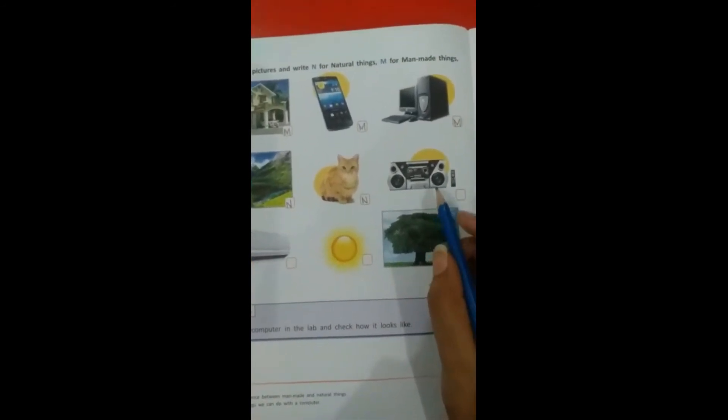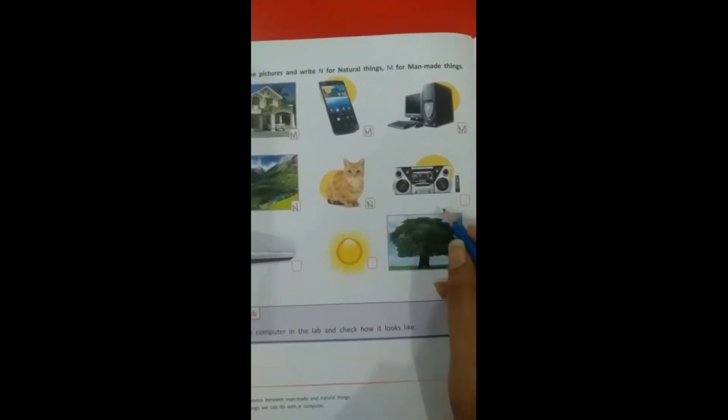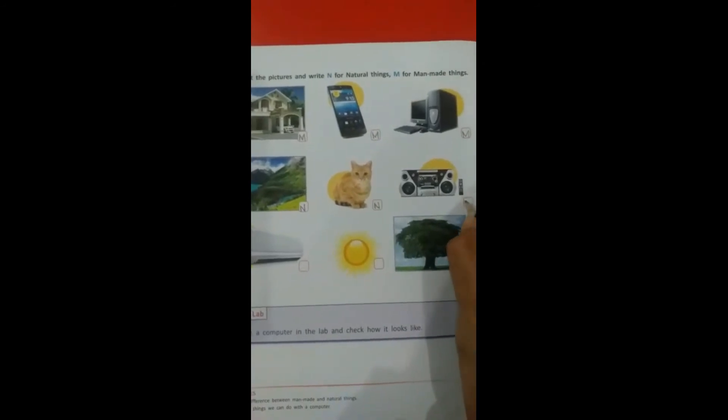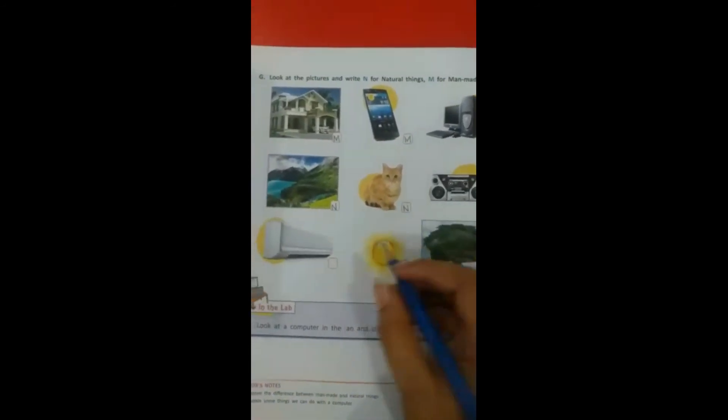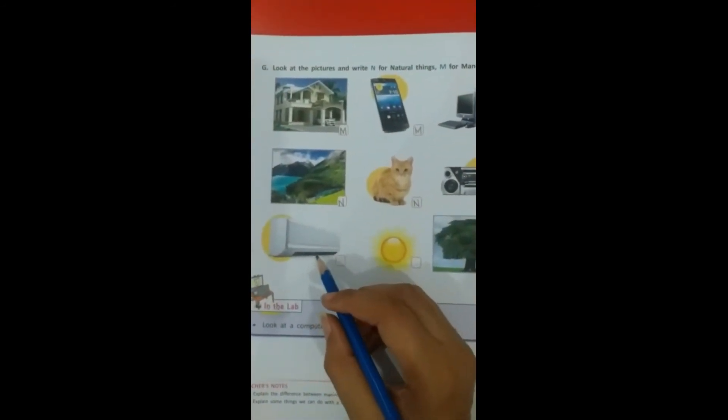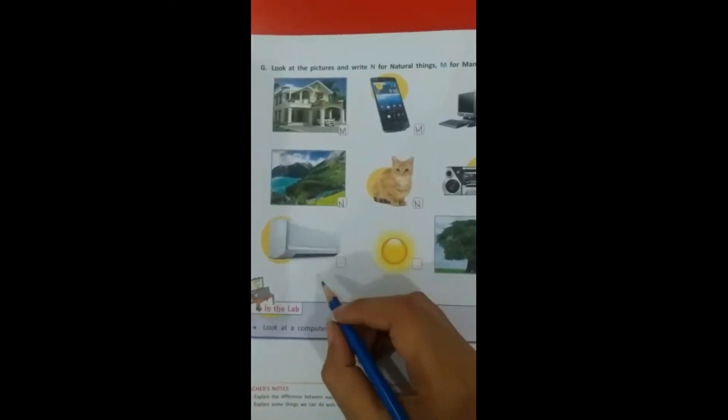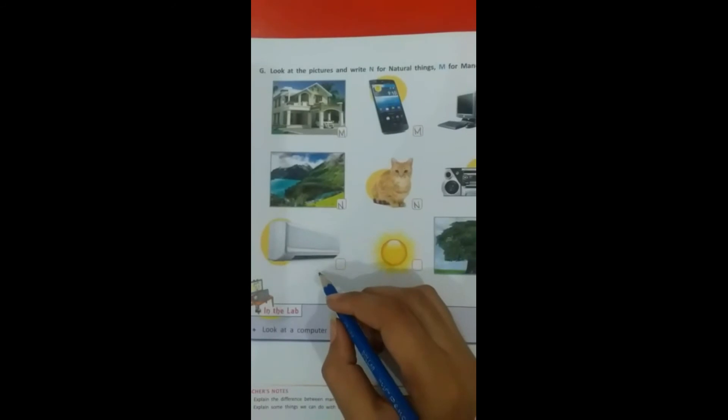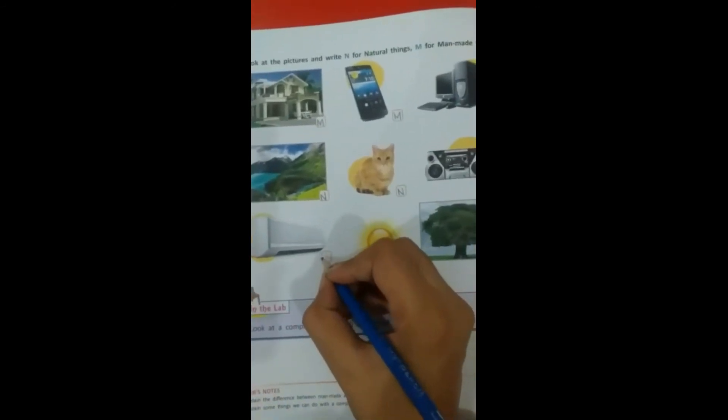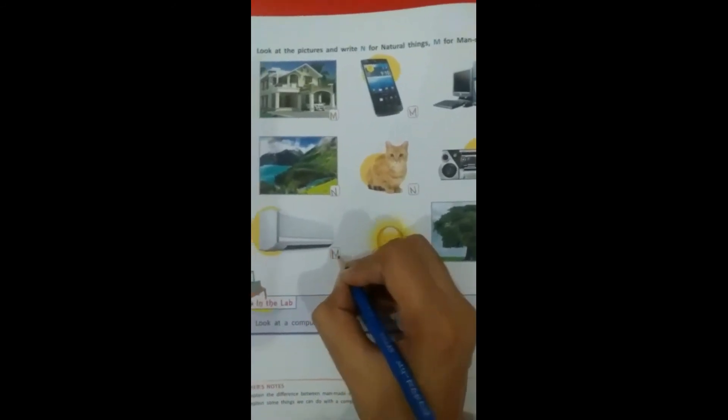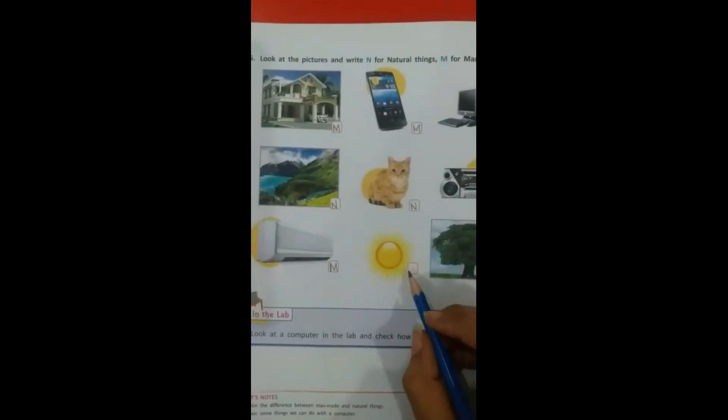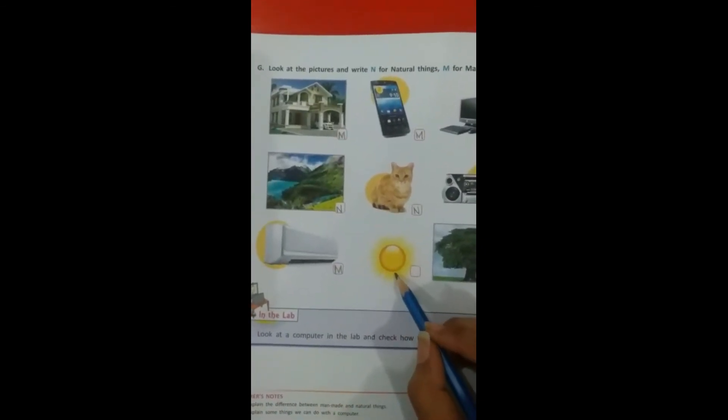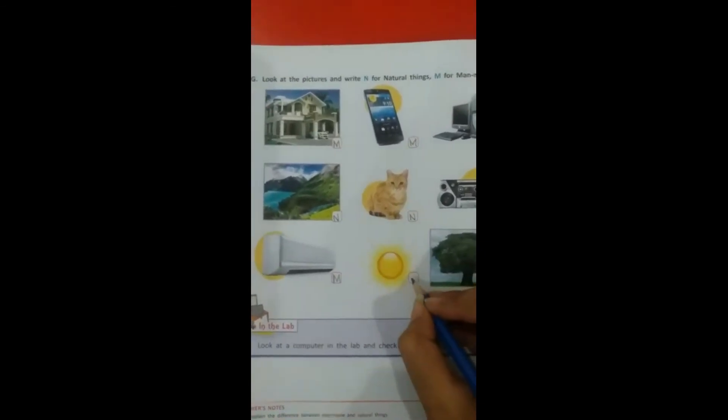Now look at the next picture. The sun. The sun is a natural thing, so we write N in this box.